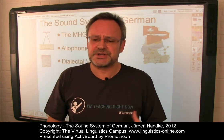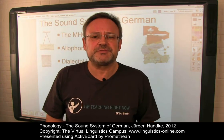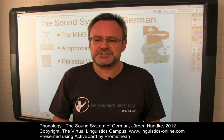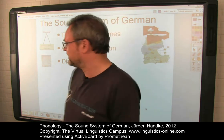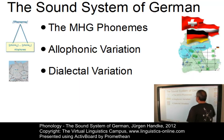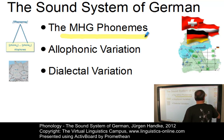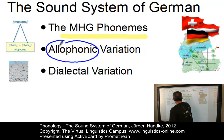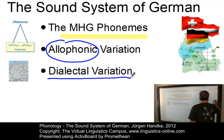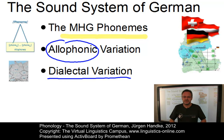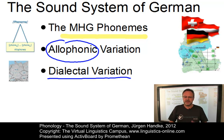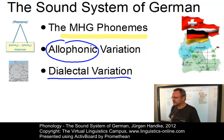This e-lecture discusses the segmental phonological inventory of German on the basis of its main variety, Standard German. This includes the discussion of the modern high German phonemes, some selected aspects of allophonic variation, including the discussion of special variants in some German dialects. Let us start with a brief look at the inventory of the German phonemes first.